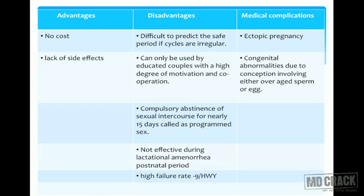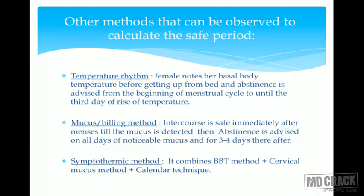Abstinence is required for almost half the month. It is not applicable during the postnatal period because ovulation is unpredictable. The failure rate is around 9 per 100 woman-years. If pregnancy occurs during failure, there are higher chances of ectopic pregnancy or embryonic abnormalities due to overaged sperm or eggs. Another natural method is the temperature rhythm method — temperature drops just before ovulation and rises in the progesteronic phase, measured as basal body temperature in degrees Fahrenheit.